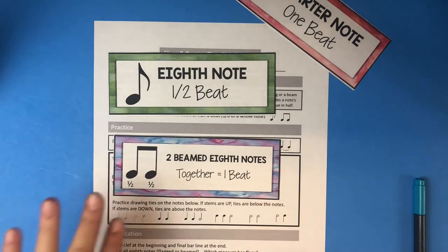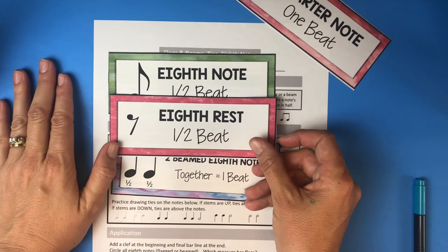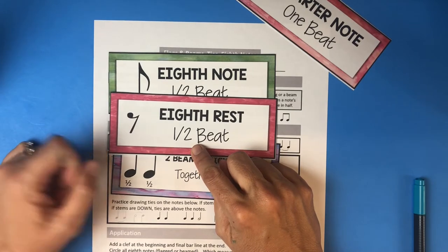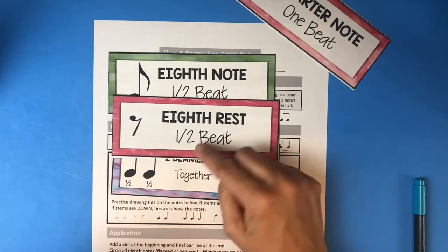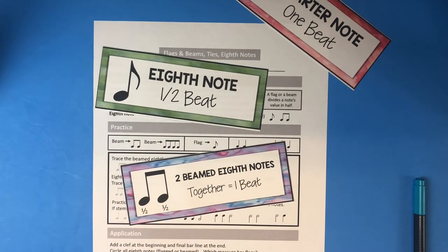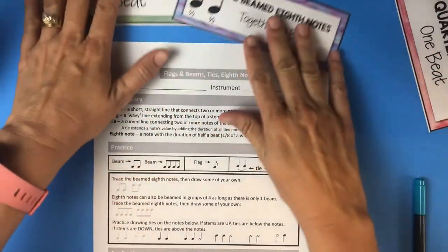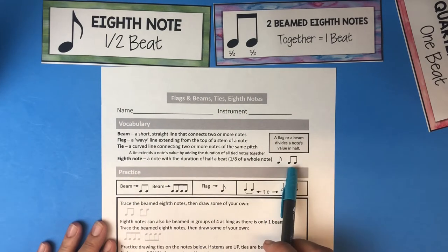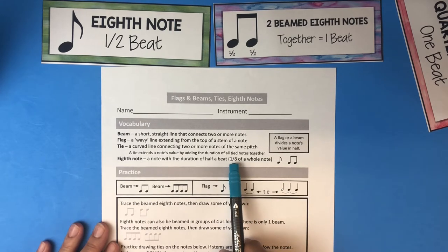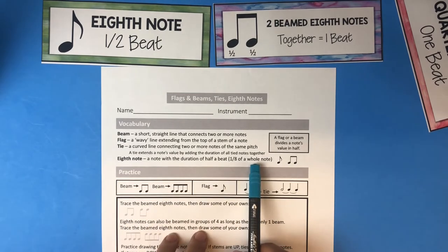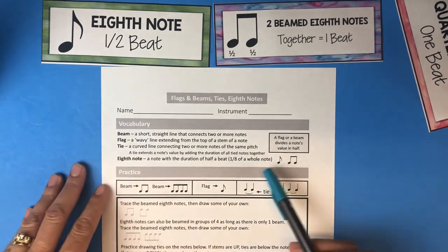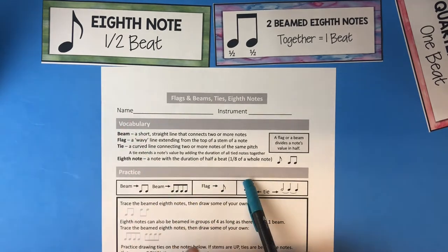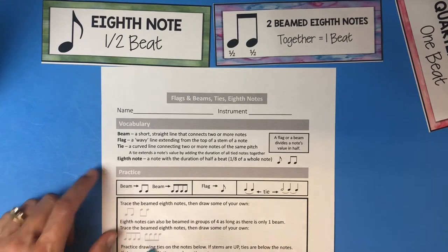A flag or beam divides the value of the note in half. There's also an eighth rest — it looks like a really fancy-looking seven — and it gets half a beat, just like all the other notes have a corresponding rest. An eighth note is one-eighth of a whole note, so it gets half of a quarter note or an eighth of a whole note. There are eight eighth notes in a whole note — like eight pieces of pie cut from a whole pie.